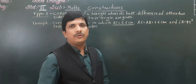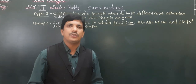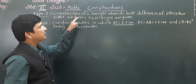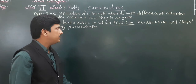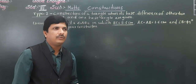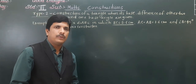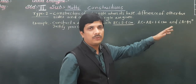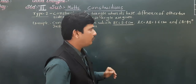Hello everybody. Today we are going to see the second type of construction of triangle — Type 2 construction of triangle — when its base, difference of the other two sides, and base angle are given. Three things are given. Yesterday we also saw one such example where difference was given, but this is the second type, and we will see why now.